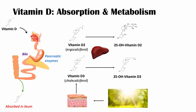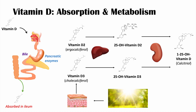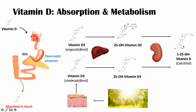The next destination is the kidneys. In the kidneys, there's another enzyme called 1-alpha-hydroxylase, which adds another hydroxyl group on the opposite end. So we've added one hydroxyl group here and another one here, giving us 1,25-hydroxyvitamin D.